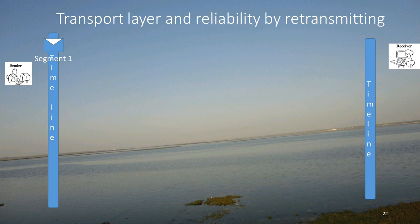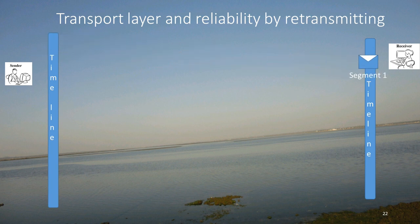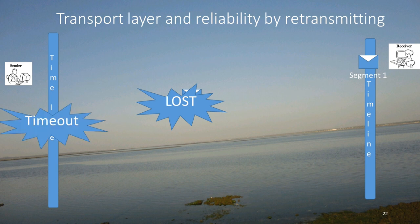Now let us try to see what the job of the transport layer is. Through an animation, we have two entities — one is a sender and the other is a receiver. Both of them, we assume, are using TCP. When a segment is sent, the receiver responds back with something called an ACK, or acknowledgement.